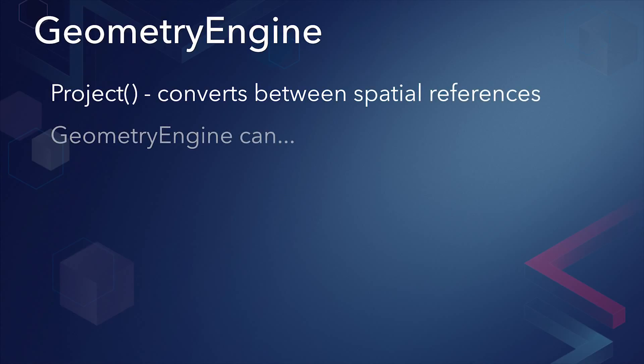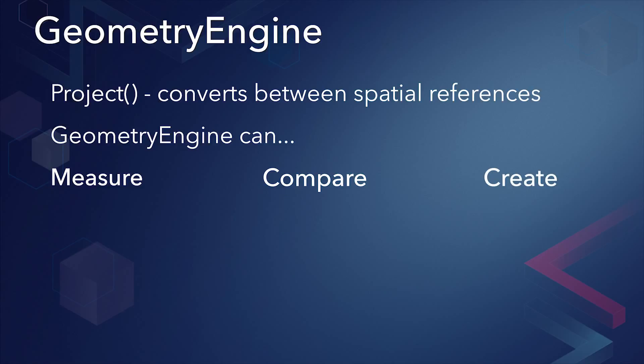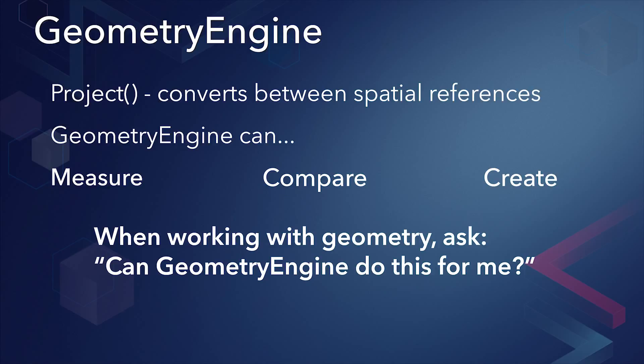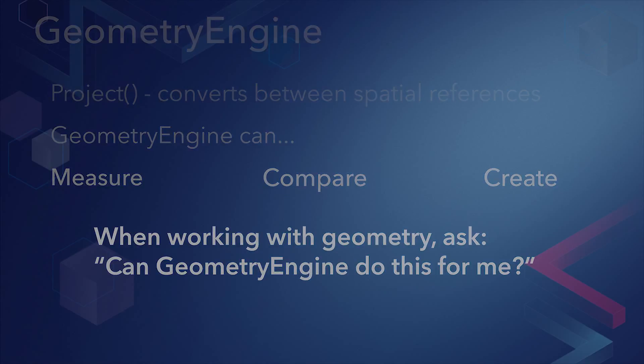ArcGIS Runtime also provides tools as part of Geometry Engine for manipulating geometry. You can use Geometry Engine to create measurements that accurately account for the curvature of the Earth, compare geometries, and create new geometries like buffers. There isn't enough time to cover all aspects of the Geometry Engine, so I want to encourage you to take a few minutes to familiarize yourself with what it offers. Anytime you're manipulating geometries — whether to measure, make comparisons, or transform — you should consider using Geometry Engine.